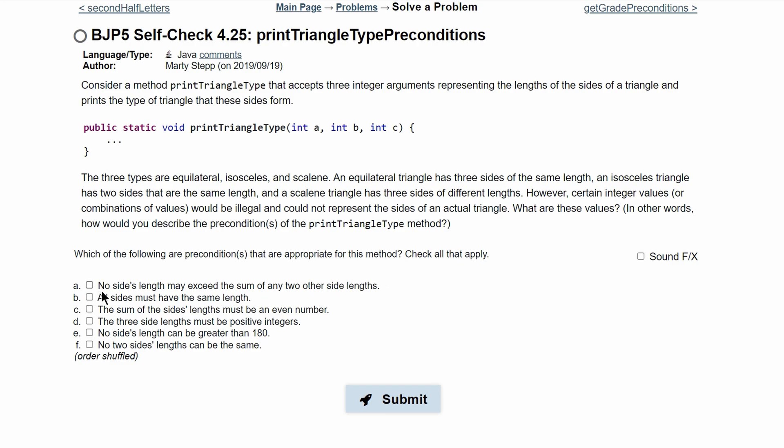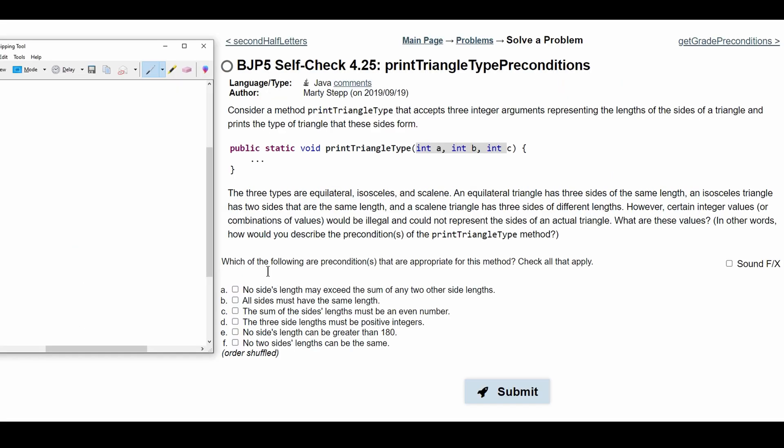First, we have A: No side's length may exceed the sum of any other two side lengths. Now, if we recall the rules of triangles, so if we have a triangle that looks like this, and it says no side lengths may exceed the sum of two other side lengths, even though we have this huge side length, it cannot exceed the length of this side length and this side length added together.